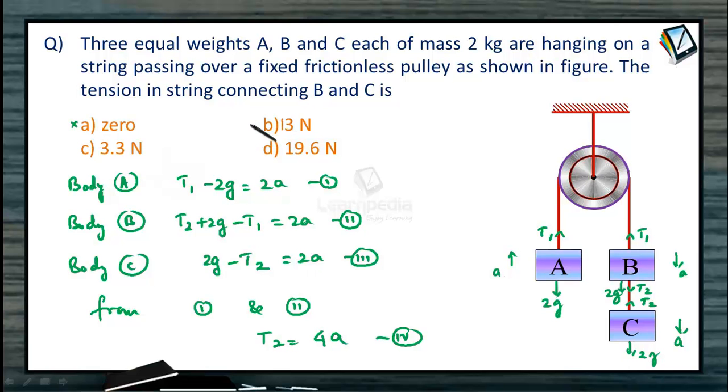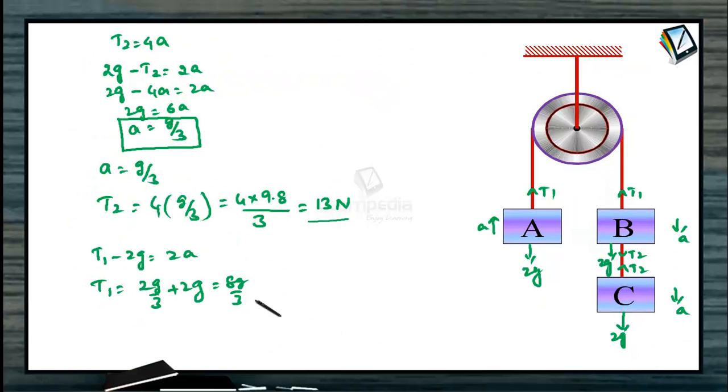Option A, 0 Newton is wrong. Option B, 13 Newton is the correct answer. 3.3 Newton is wrong. 19.6 Newton is also wrong. So, correct option will be option B. Since we got the total answer as 13 Newton.